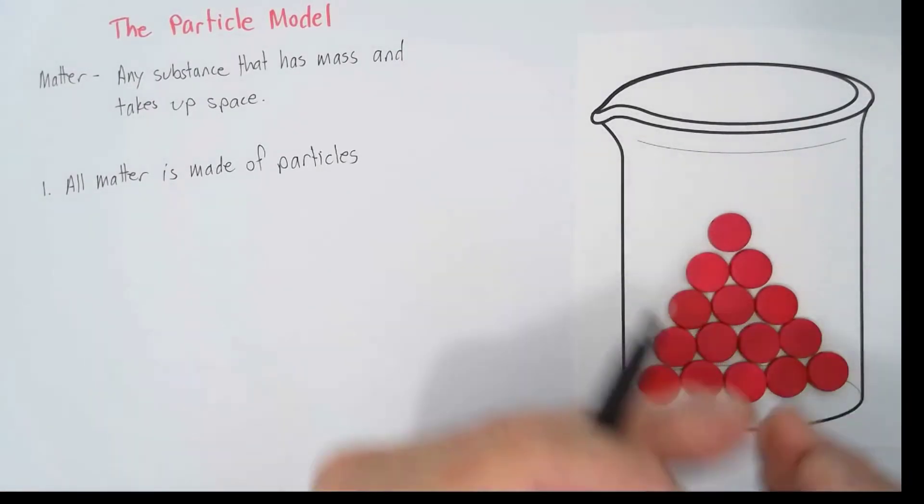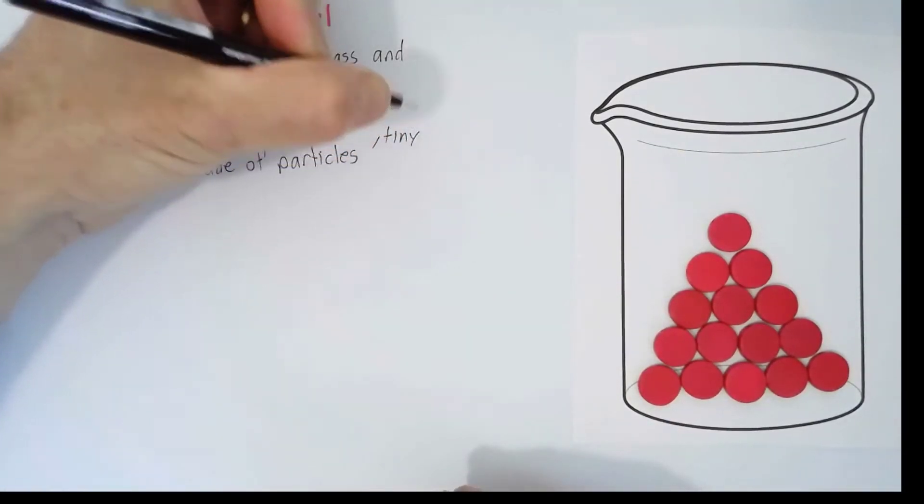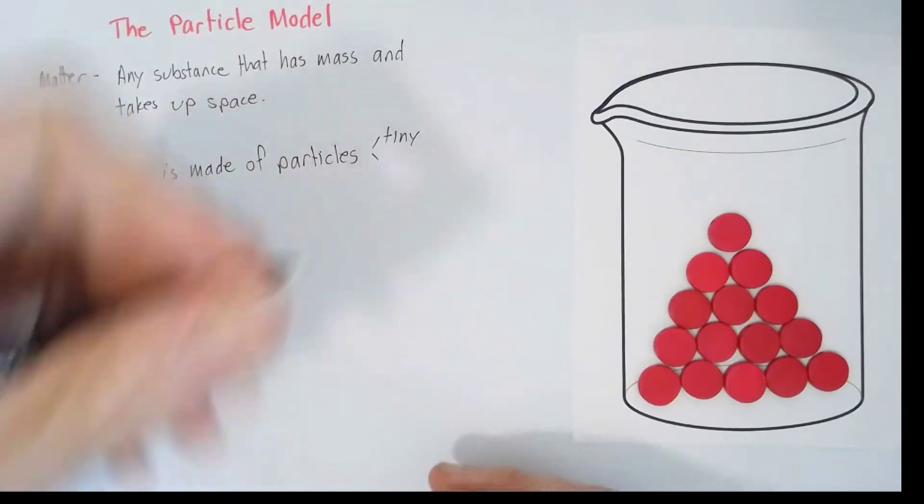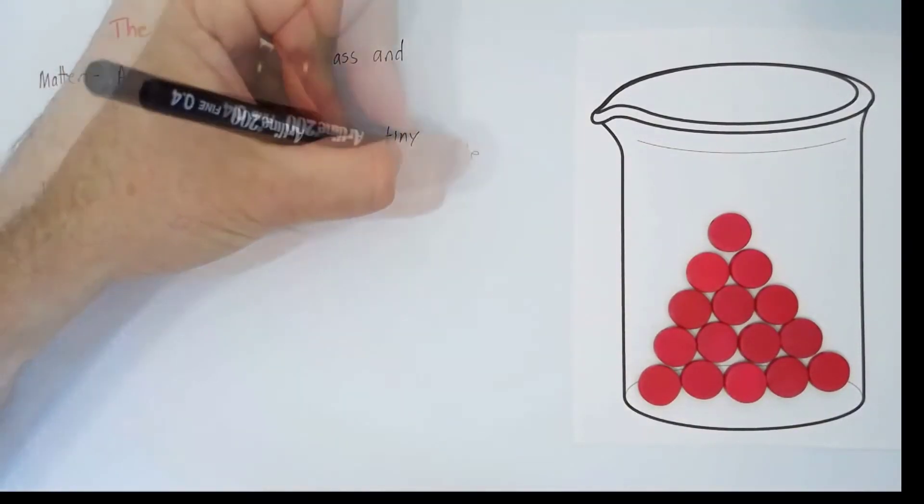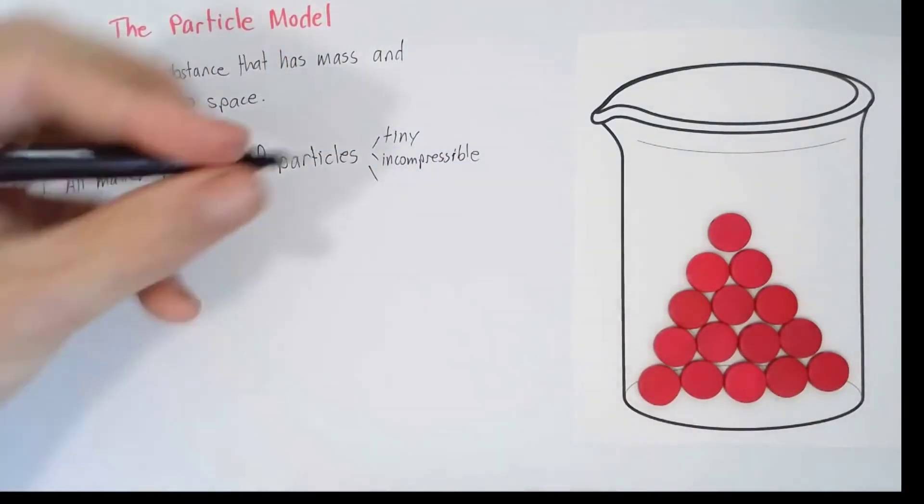We can't squeeze them or squash them. So they're tiny and they're incompressible. We can't squeeze them anymore, and they're indivisible. That means we can't divide them up anymore.